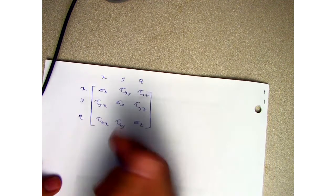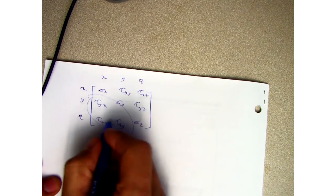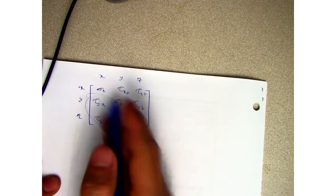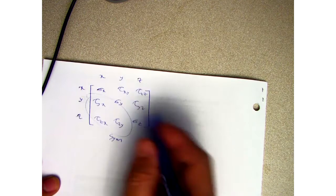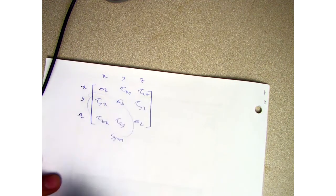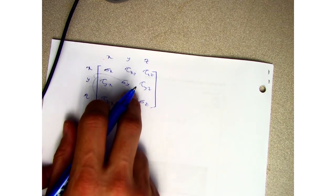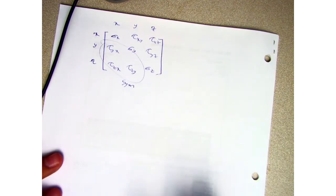So you guys know that this metrics is going to be symmetric. So the lower triangular part of the metrics is going to be equal to the upper triangular. So once you put your stresses into this form, for this metrics, you can find eigenvalues and eigenvectors to find your principal stresses and principal axes.